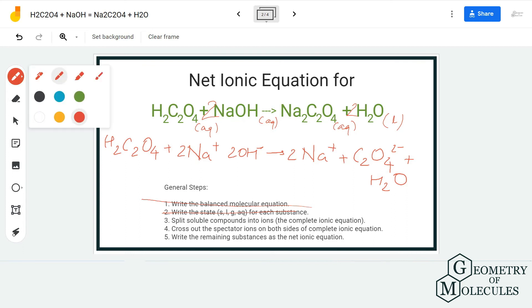Now you have to cross out the spectator ions on both the sides. So the spectator ions are the ions which remain the same on both the sides and there are no changes in them.